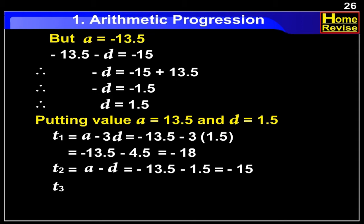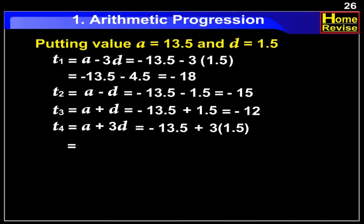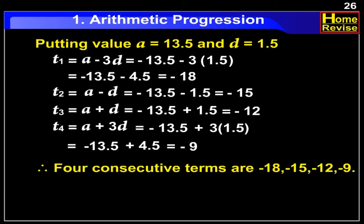Further, t3 (the 3rd term) is equal to a plus d, which is minus 13.5 plus 1.5, equal to minus 12. Further, t4 (the 4th term) is equal to a plus 3d, which is minus 13.5 plus 4.5, equal to minus 9. Therefore, the 4 consecutive terms are minus 18, minus 15, minus 12, and minus 9.